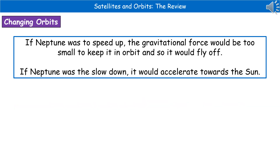Consider Neptune as an example of what happens if it moved at different speeds. If Neptune were to speed up, the gravitational force would be too small to keep it in orbit, and it would fly off into the depths of space. Whereas if Neptune were to slow down, it could no longer maintain its fixed orbit — it would start to accelerate towards the sun because the pull of gravity would be stronger than the outward force.